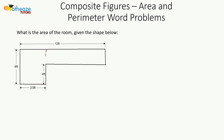We're going to break this up into two rectangles — let's call this rectangle A and this one B. For area of A, it's length times width. Our length here is 6 and our width is 3.5, which gives us 21 square feet.